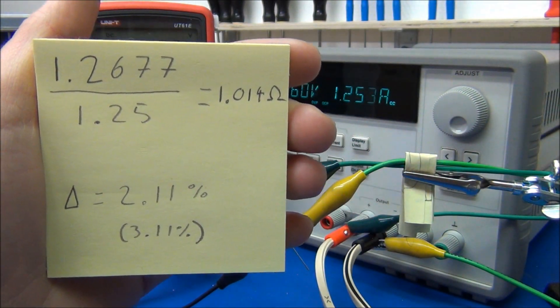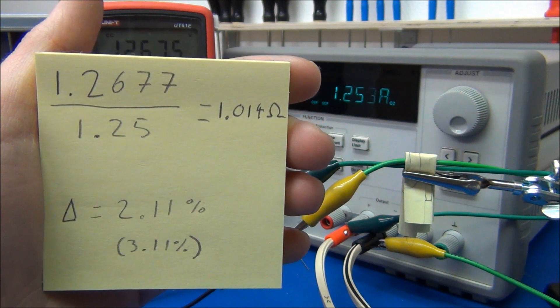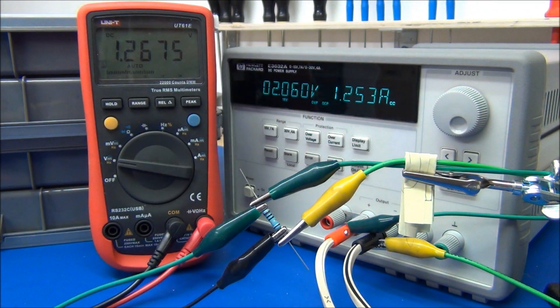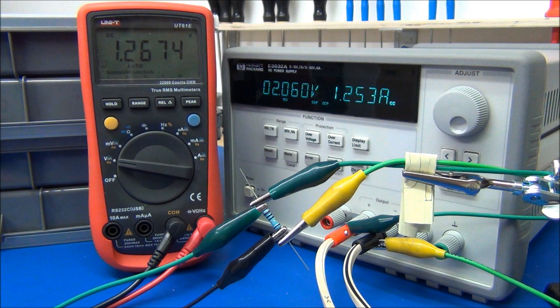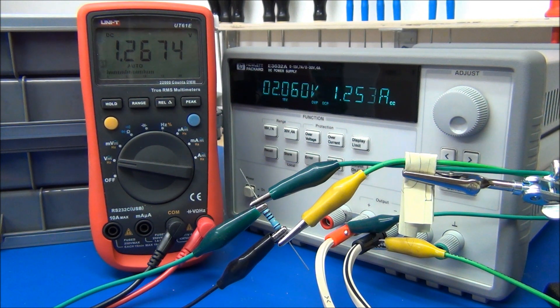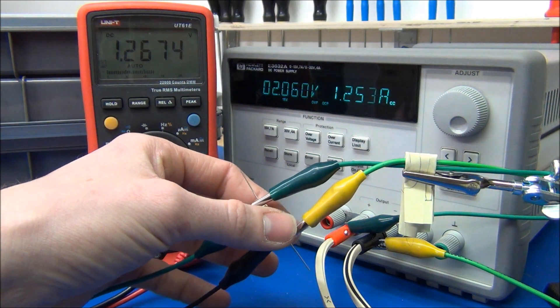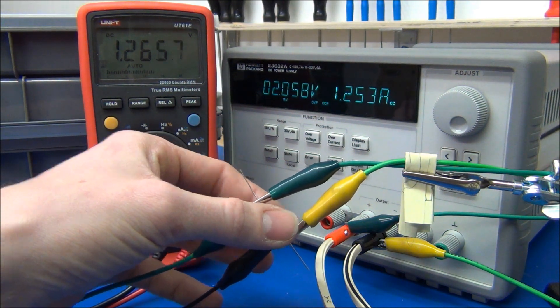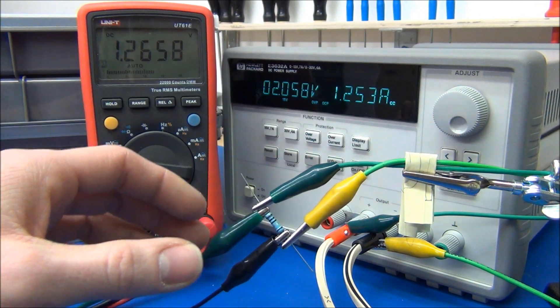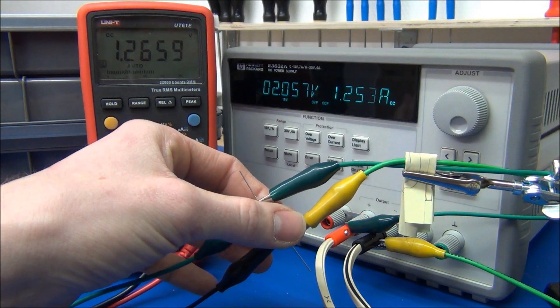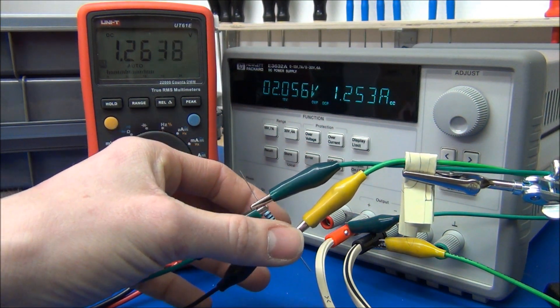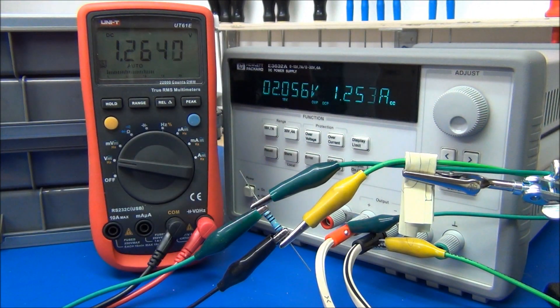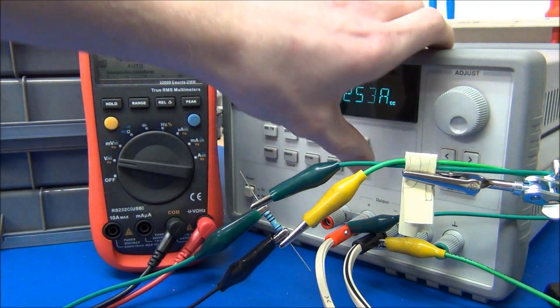But of course, you should not dissipate 1.25W in these 1W resistors. But still if you dissipate 1W in them, it will still be 1.46% over the temperature range. And now this is... I don't want to touch that. You can see the temperature is dropping, but that's hot. I don't want to touch that.